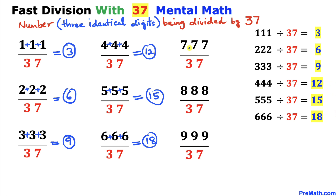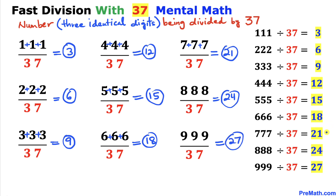For the next three: seven plus seven plus seven gives us 21. Eight plus eight plus eight gives us 24. And nine plus nine plus nine gives us 27. So our final three answers are 21, 24, and 27. Thanks for watching — please don't forget to subscribe to my channel for more exciting videos!